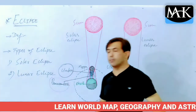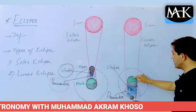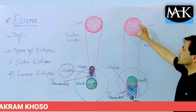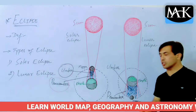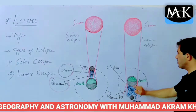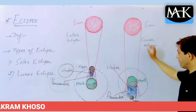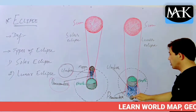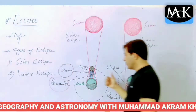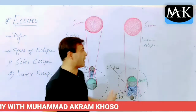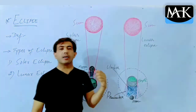Now moving towards the lunar eclipse — again we have the same three bodies: the sun, the earth, and the moon. In lunar eclipse, the earth comes in between the sun and the moon. The sun stays in its place, and only the moon changes its position such that the earth is now between the sun and the moon. This process is known as the lunar eclipse.